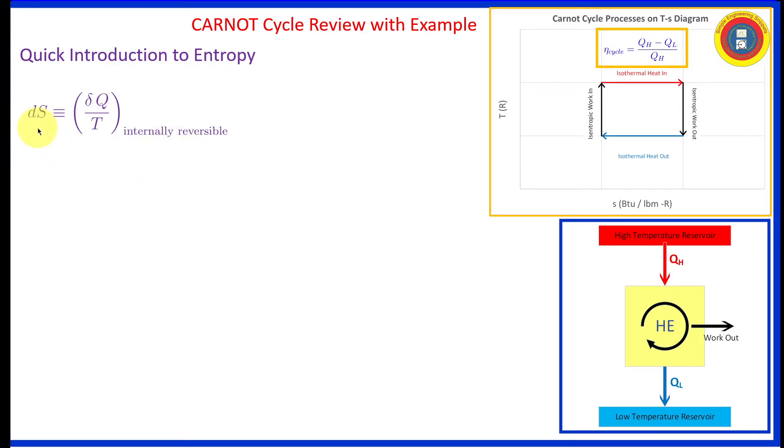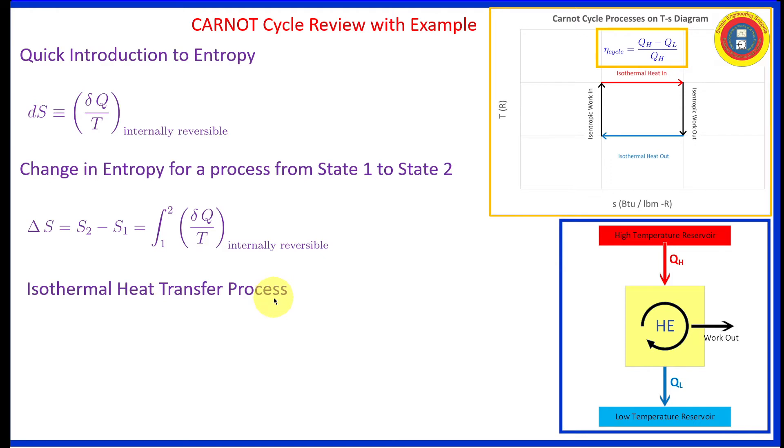Entropy is a property. Its definition of the change in entropy is equal to incremental heat transfer divided by the absolute temperature, and that type of process should be internally reversible. So it is a property, and we want to be able to find the change in that property from state 1 to state 2, and we can do that by integration. For our particular processes involving heat transfer for the Carnot cycle, they are isothermal, so we can pull the temperature out of this integral sign. So we get the change in entropy is equal to the amount of heat transfer divided by the absolute temperature, and we can solve that for the amount of energy transfer.